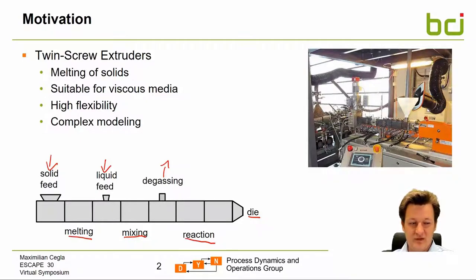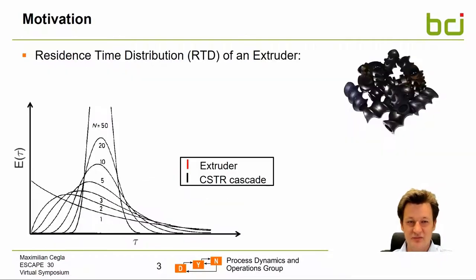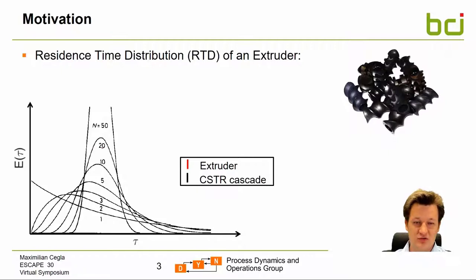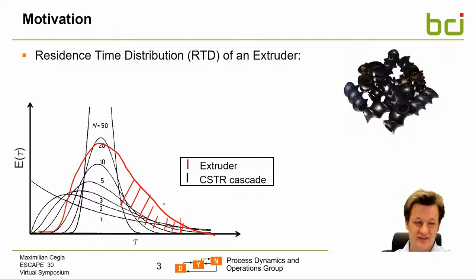This is because there are various strongly interacted and coupled states, such as all the internal flows as well as the temperature, which is coupled with the flows again over the viscosity. As already shown in the motivation, the residence time distribution of such an extruder is very important, especially in the case of reactive extrusion. The classical description of residence time distribution is a cascade of CSTRs. By increasing the number of CSTRs in series the distribution becomes more narrow, but the drawback is that an extruder's RTD does not follow a CSTR cascade — it shows some tailing.